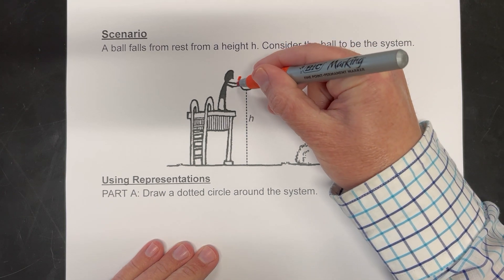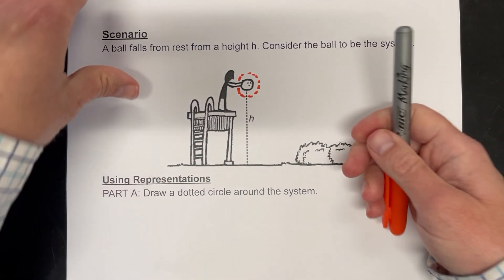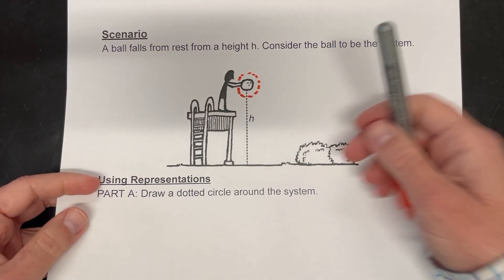Okay, well, they said the ball is the system. So there we go. That's our system. Anything outside of that ball is considered outside the system there. So let's move on. Easy enough.